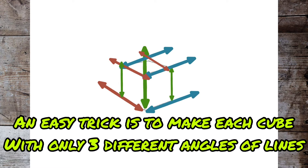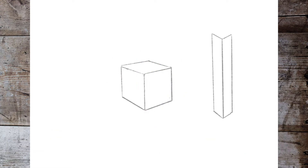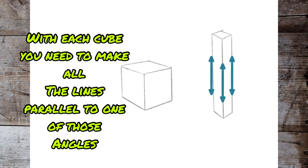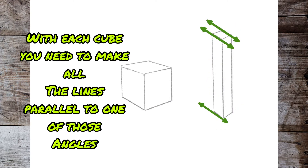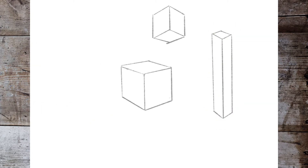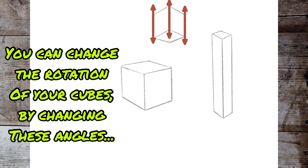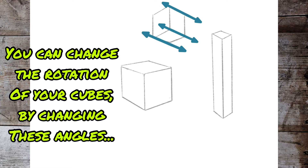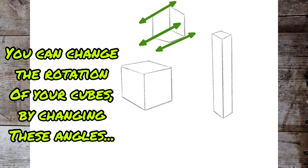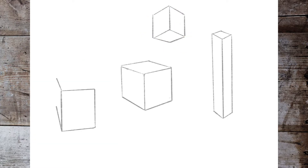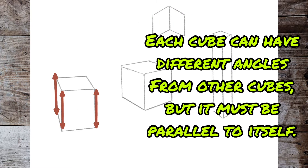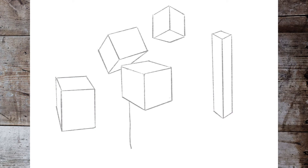An easy trick is to make each cube with only three different angles of lines. With each cube, you need to make all the lines parallel to one of those angles. You can change the rotation of your cubes by changing those angles. Each cube can have different angles from other cubes, but it must be parallel to itself.